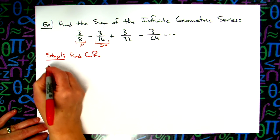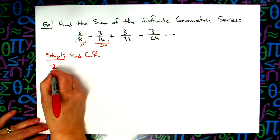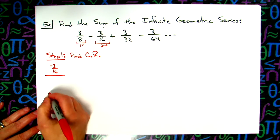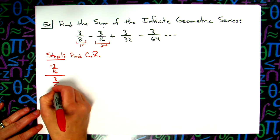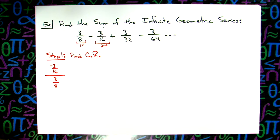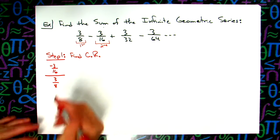So if I take the negative 3/16ths, my second term, divided by the first term. That way you're not guessing at it, and you're not struggling to try to find that common ratio. Take the second term, divide by the first term.